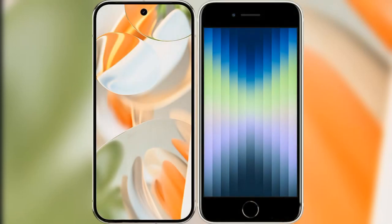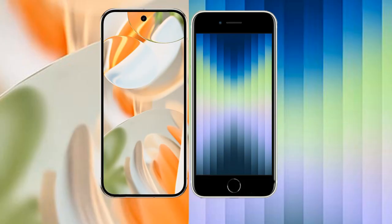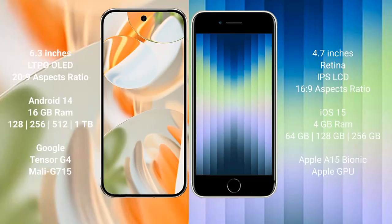I will compare the new Google Pixel 9 Pro with the iPhone XC. Google Pixel 9 Pro features a 6.3-inch LTPO OLED display with a 9:16 aspect ratio. The iPhone XC features a 4.7-inch Retina IPS LCD display with a 9:16 aspect ratio.